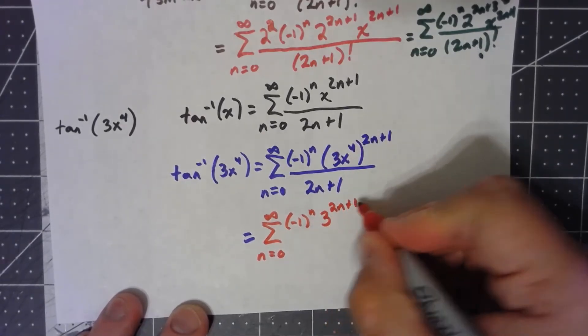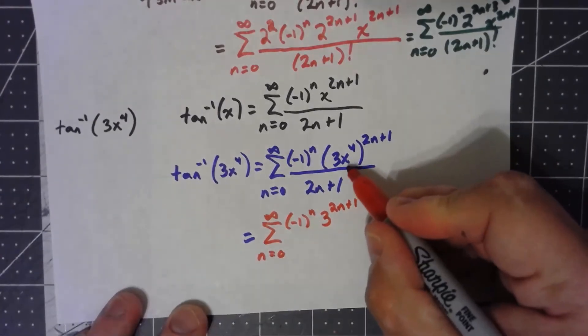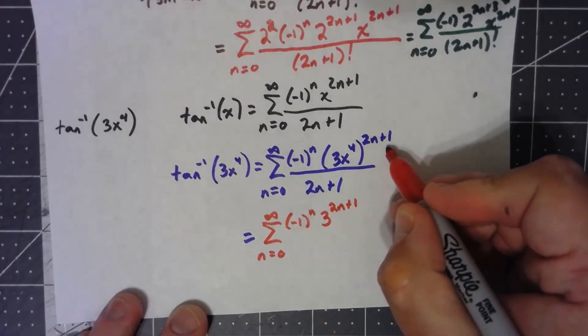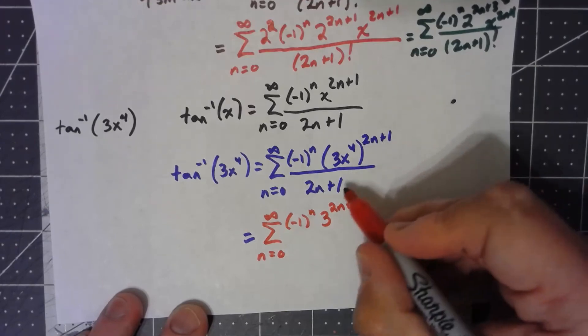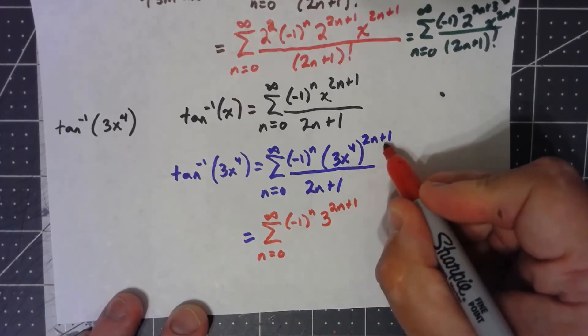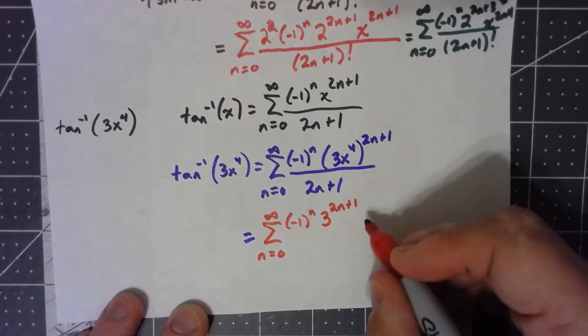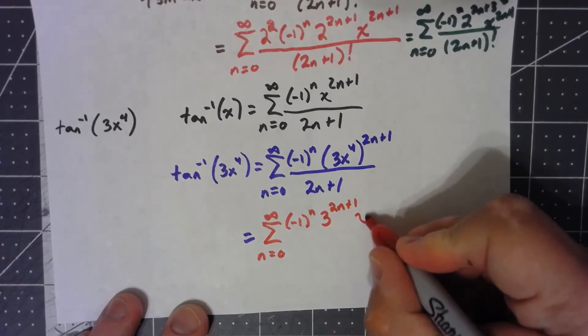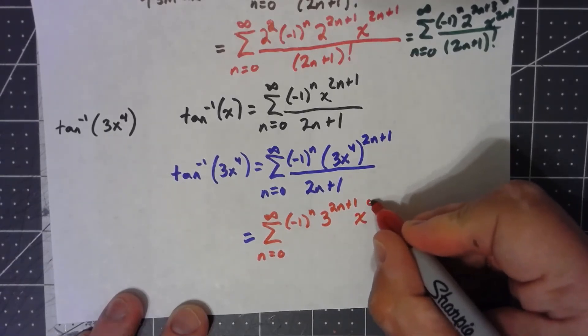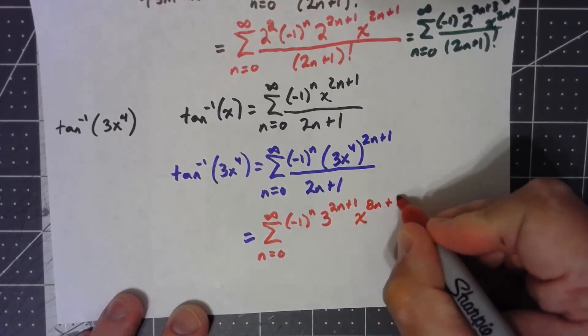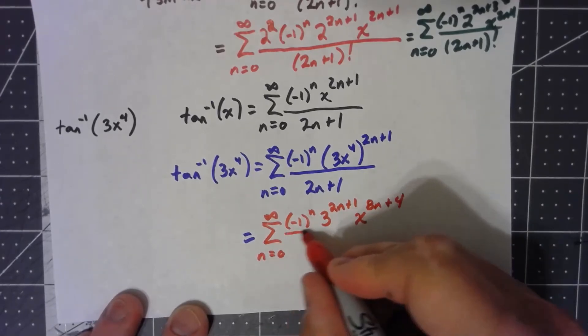and what happens when I take x to the 4th to the 2n plus 1? Well, you've got a power raised to a power so you multiply the powers, that gives me x to the 8n plus 4 over 2n plus 1.